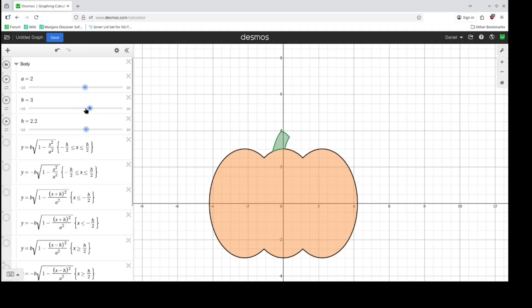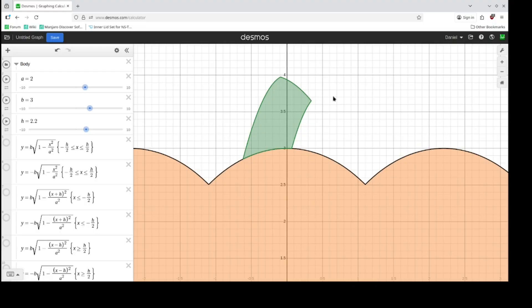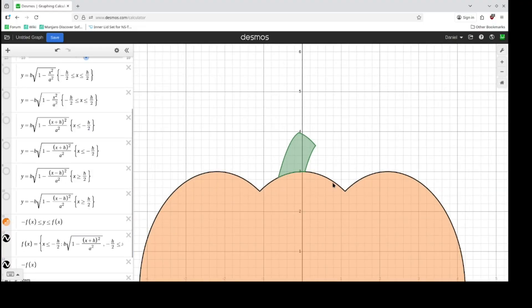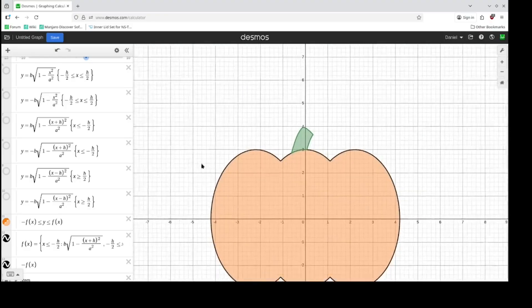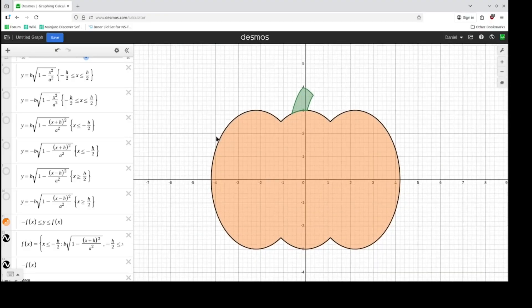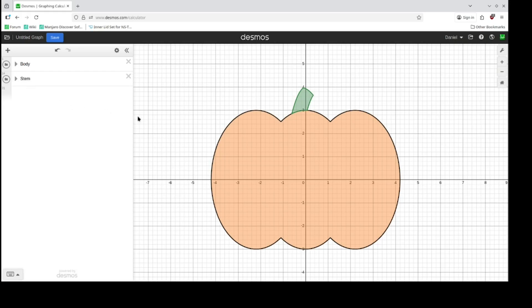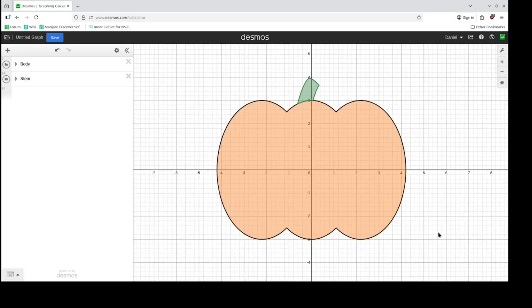So you can play with these values if you want. For bonus points, you can make your stem adjustable relative to this one here. Other than that, it's a very simple pumpkin. Hope you found it helpful. If you did, leave a like. If not, let me know in the comments what you could have found more helpful. Thanks for watching, and I'll see you next video.